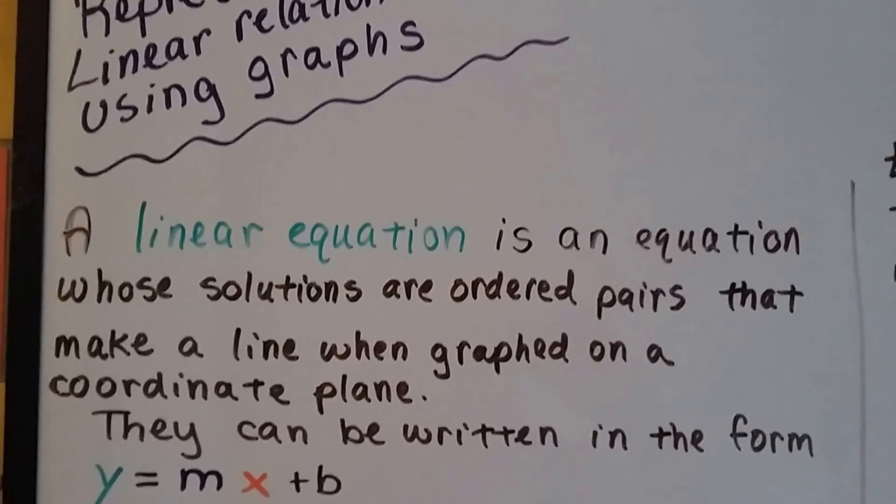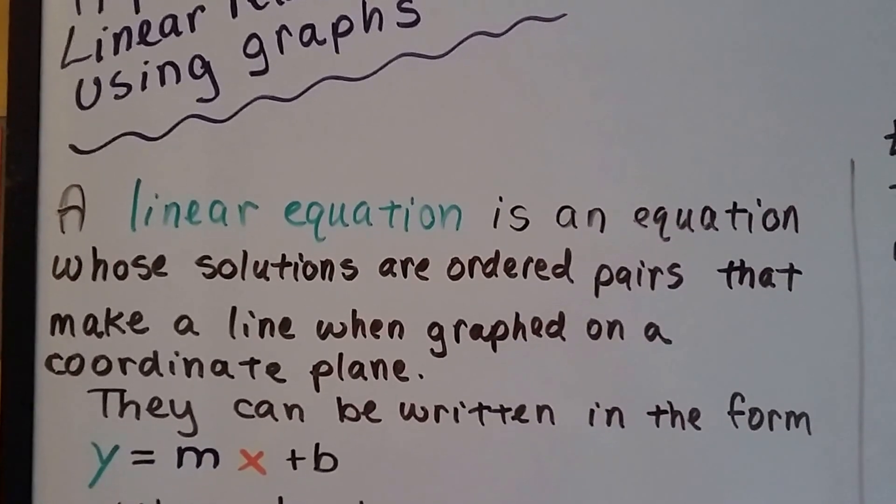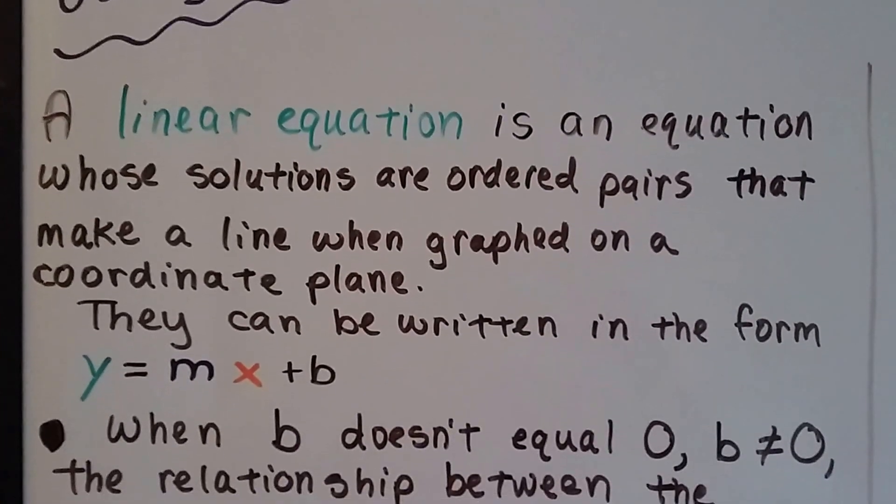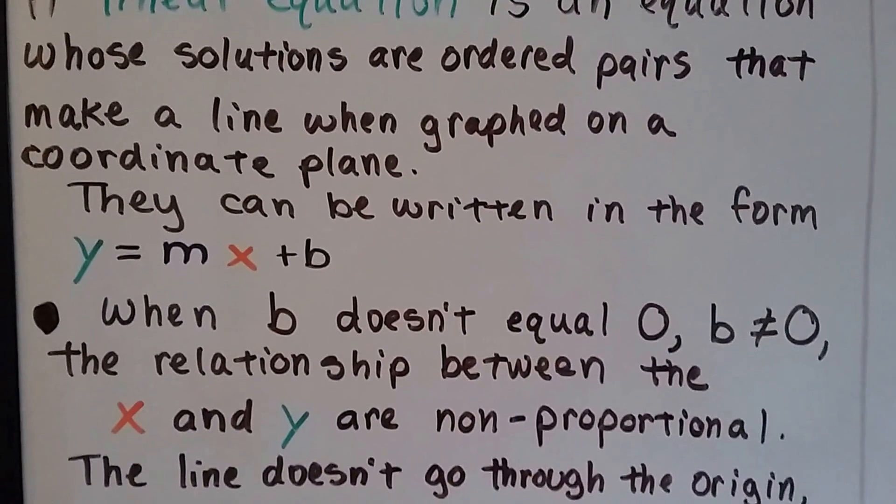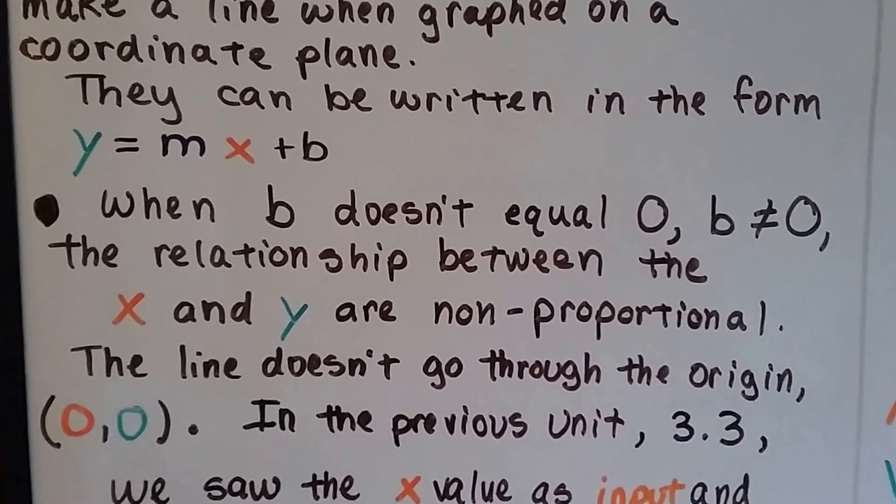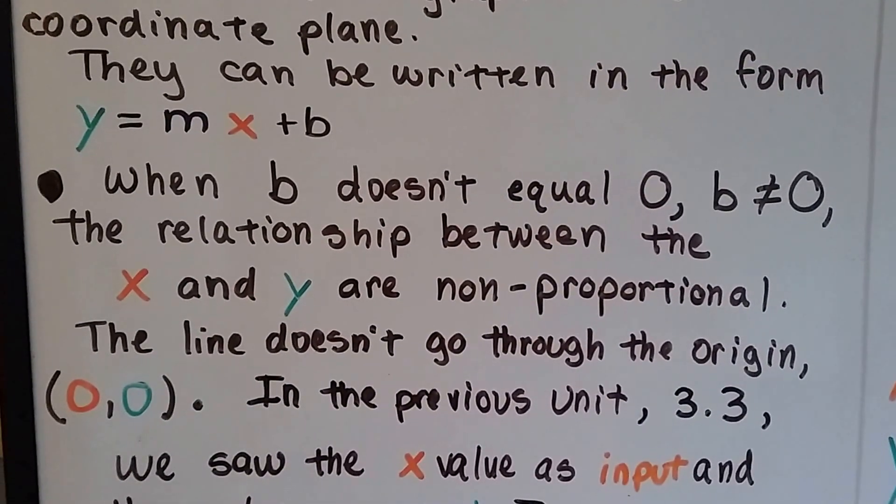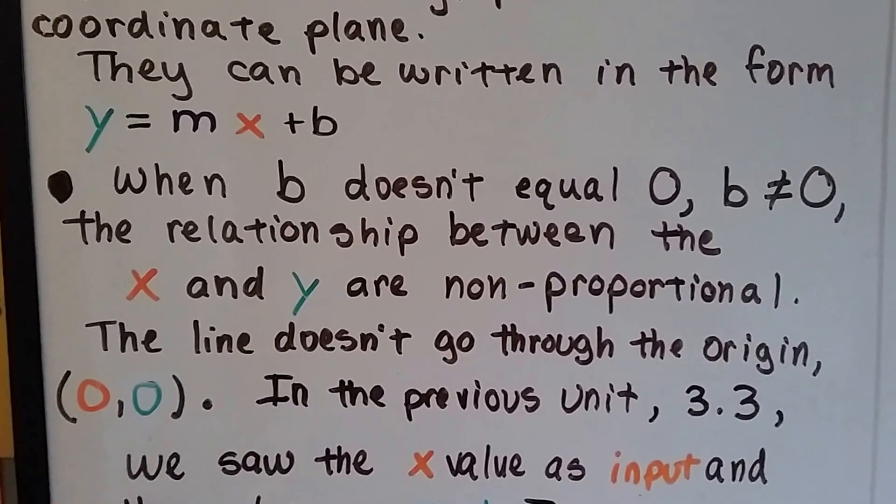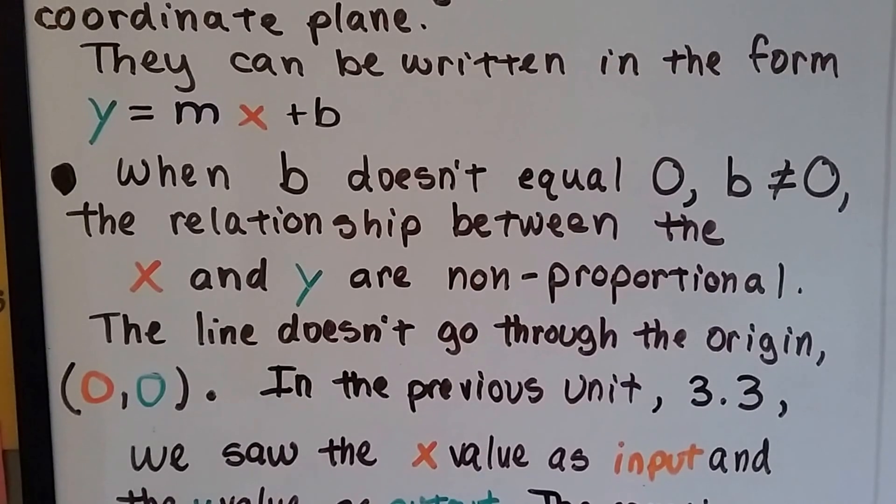A linear equation is an equation whose solutions are ordered pairs, x and y, that make a line when graphed on a coordinate plane. They can be written in the form y equals mx plus b, and when b doesn't equal zero, the relationship between x and y is non-proportional. The line doesn't go through the origin, zero, zero.